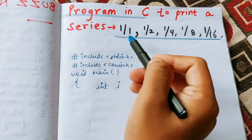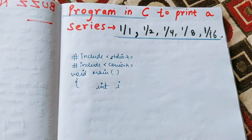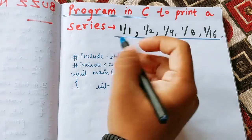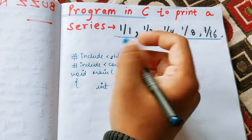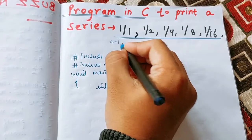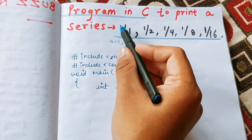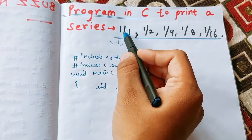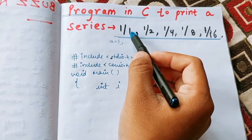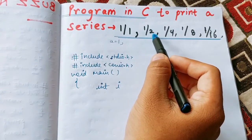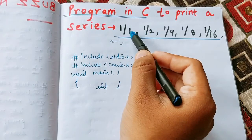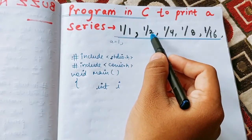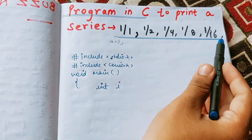Now how this series is going on — we'll declare a variable and assign it the value one. So suppose we are taking the value of a as one. We'll print the value of a, then print a slash. In the next element, we are supposed to double the denominator. The denominator is one, then two, then four, then eight, then sixteen, and so on.